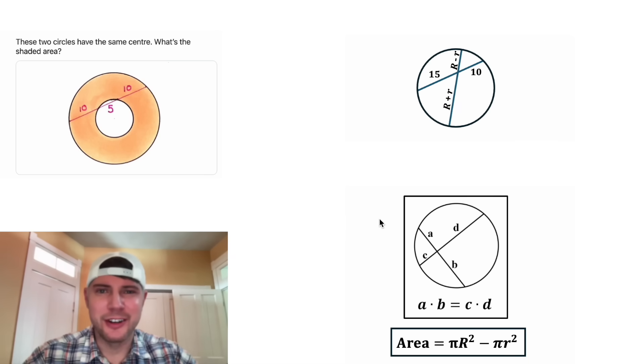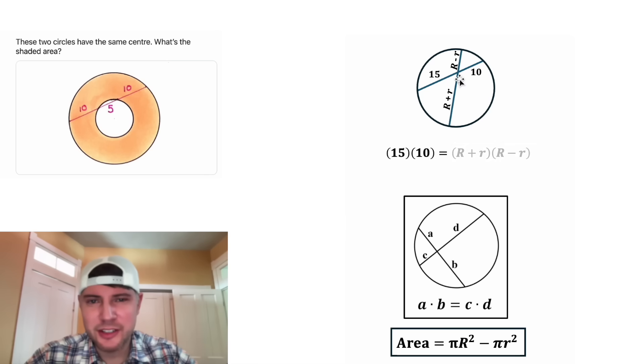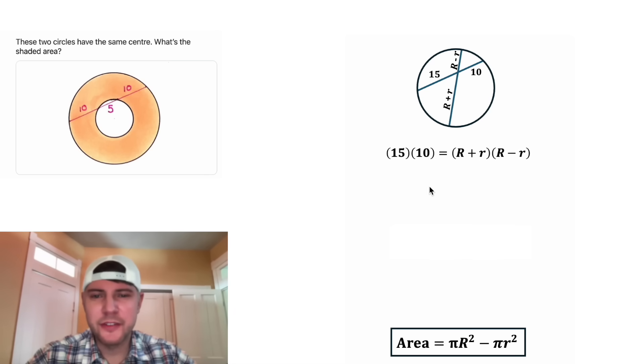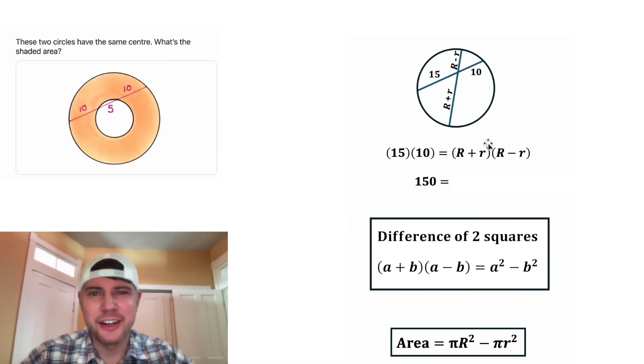Let's clean things up and use our theorem. It'll be 15 times 10 equals (R + r) times (R - r). Now let's simplify this. On the left-hand side, 15 times 10 is 150. And on the right-hand side, this is a difference of two squares. If you ever have (a + b) times (a - b), it's equal to a² - b². So (R + r) times (R - r) will be R² - r².